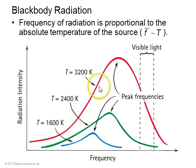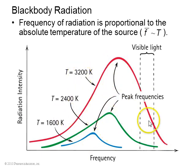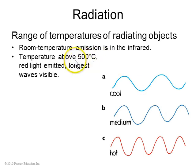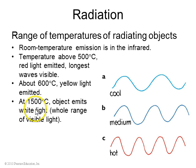As you raise the temperature of something, the peak frequency of the emitted light gets higher and higher — moving towards the blue end of the spectrum. All everyday objects are emitting mostly in the infrared. But as you increase the temperature to thousands of degrees, you see more and more visible light. A room-temperature object emits mostly in the infrared. Above about 500 degrees Celsius, something will start to glow red. At about 600 degrees Celsius it glows more yellow, and at about 1500 degrees it starts to look white hot.